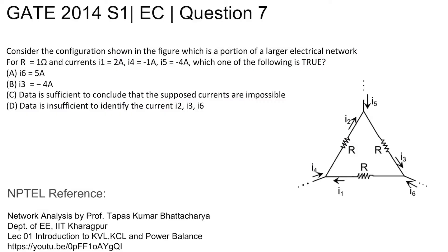This is GATE 2014 Set 1 EC question number 7. Consider the configuration shown in the figure, which is a portion of a larger electrical network. For R equal to 1 ohm and currents i1=2 ampere, i4=-1 ampere, and i5=-4 ampere, which of the following options is correct? Four options are given.